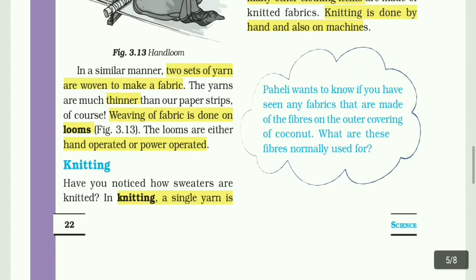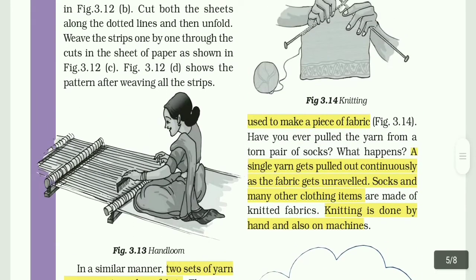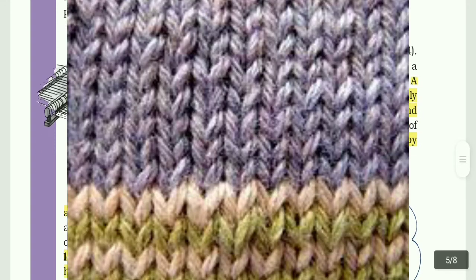Knitting is used to make a different type of fabric. Have you ever pulled the yarn from a torn pair of socks? What happens is a single yarn gets pulled out continuously as the fabric gets unraveled. Socks and many other clothing items are knitted fabrics. Knitting is done by hand and also by machines.